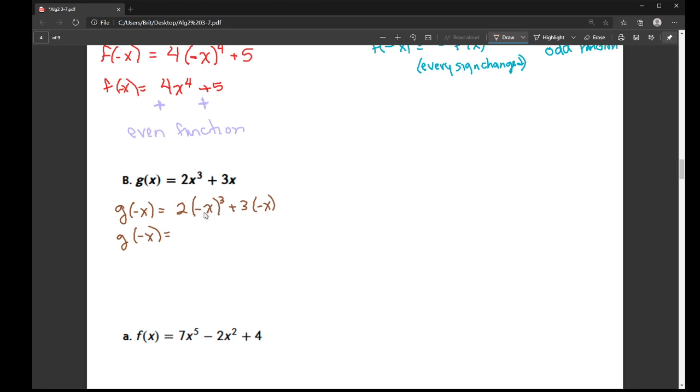So here, this is like doing 2 times negative x, times negative x, times negative x. So three negatives causes you to have a negative 2. And then x times x times negative x is x cubed. So this is negative 2x cubed.